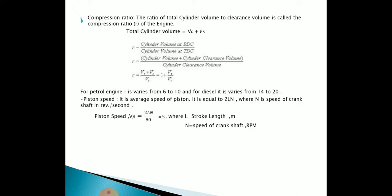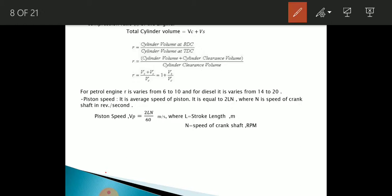Compression ratio is the ratio of total cylinder volume to the clearance volume. Total cylinder volume equals swept volume plus clearance volume. So compression ratio r = (Vs + Vc) / Vc. It is denoted by the small letter r. In the case of a petrol engine, r ranges between 6 to 10, whereas for a diesel engine the value is higher, ranging from 14 to 20.